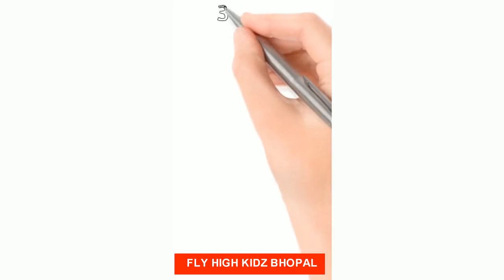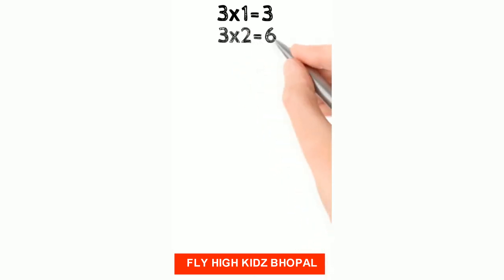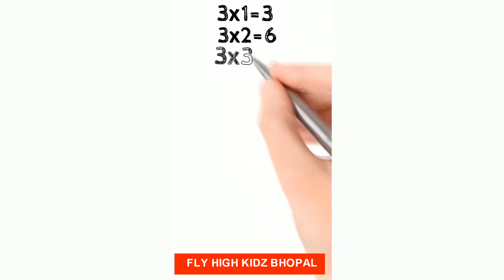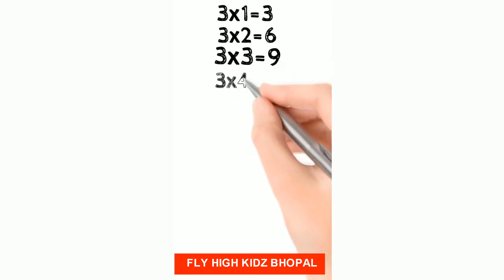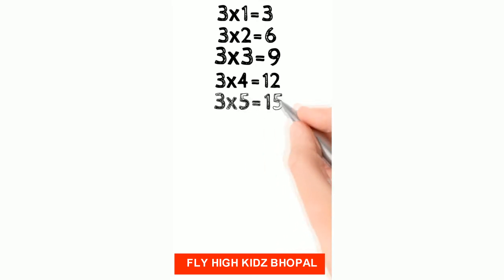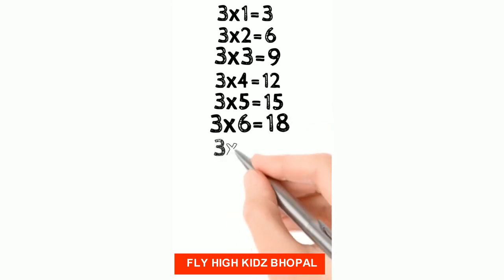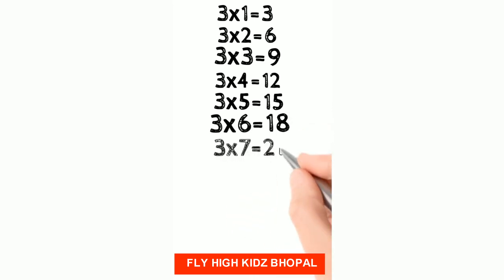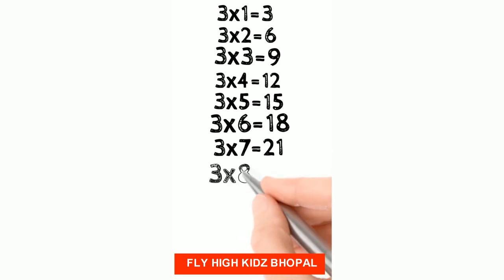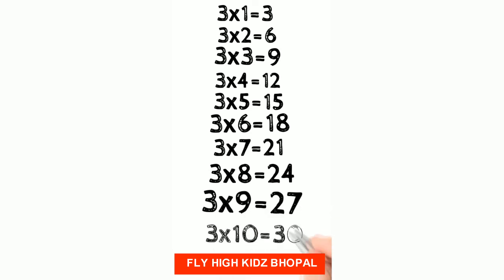Let's do again. 3 1's are 3, 3 2's are 6, 3 3's are 9, 3 4's are 12, 3 5's are 15, 3 6's are 18, 3 7's are 21, 3 8's are 24, 3 9's are 27, 3 10's are 30.